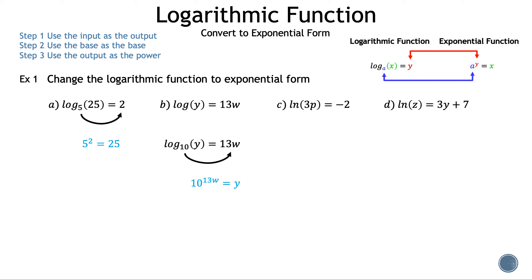Now let's move on to c: natural log of 3p is equal to negative 2. Let's draw an arrow from the base to the output. Where is the base? The base is e, and we don't write that because natural log is a special case of logarithms when the base is always e. In this case, e to negative 2. The e will be the base of the exponential, and negative 2 will be the power. We set that equal to the last variable we haven't used, 3p. So our exponential is e to negative 2 is equal to 3p.